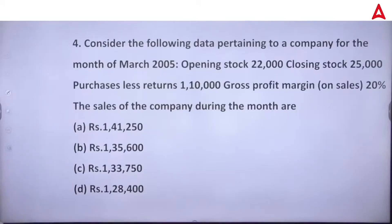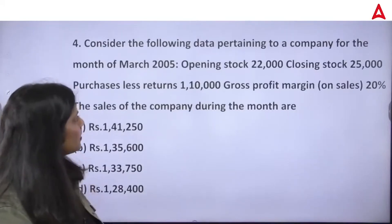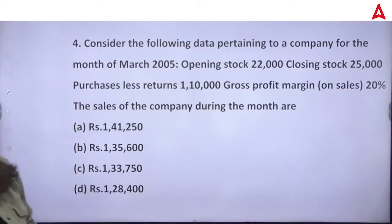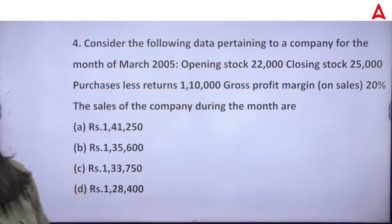Consider the following data pertaining to a company for the month of March 2005. Opening stock is given, closing stock is given, purchase is given less return. Gross profit is given on sales. You have to find the sales of the company during the month.